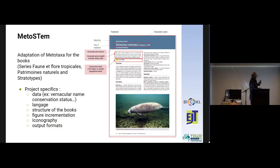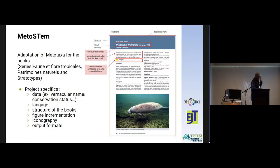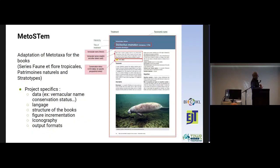The Paris Museum also developed an additional module of their system called MetaStem, which is designed to extract and republish monographs, especially floras or faunas. It has some specific tags and features, for example a special field for verbatim names of plants or animals. So it is more focused on monographs, in contrast to MetaTaxa which is focused on journal articles.